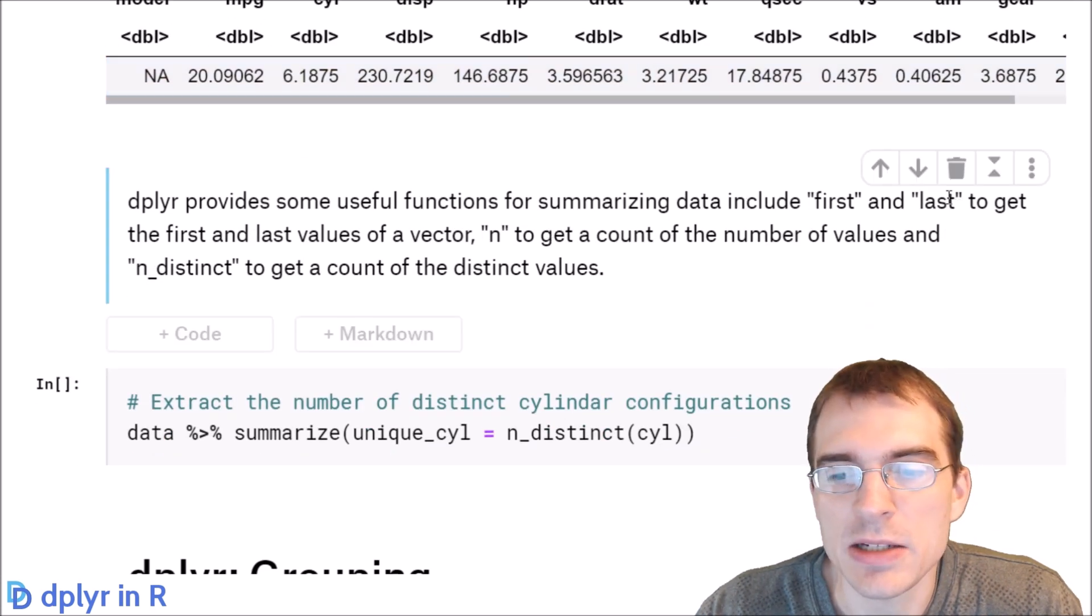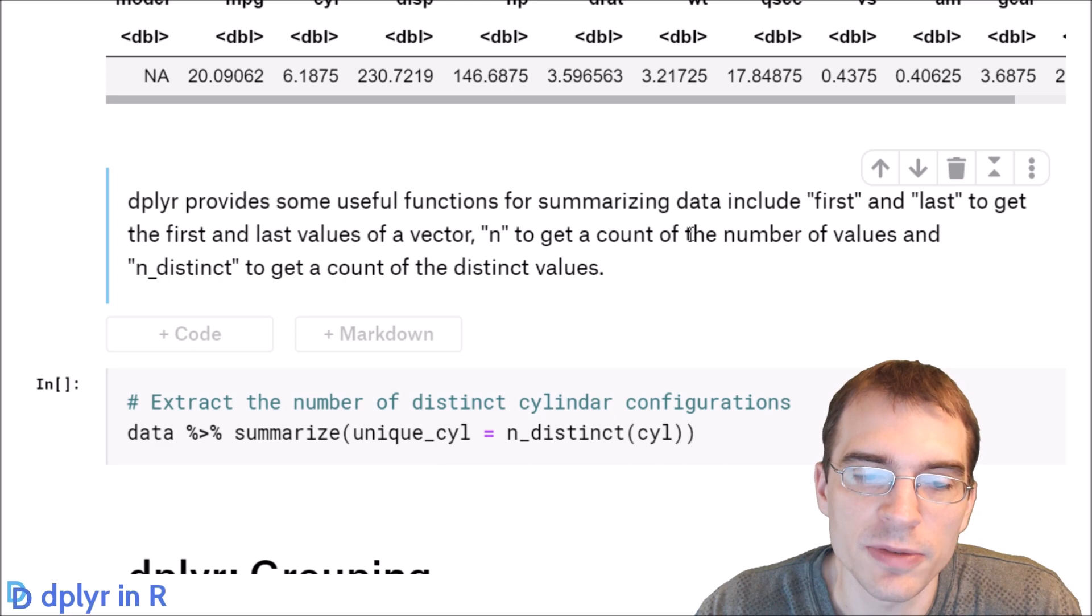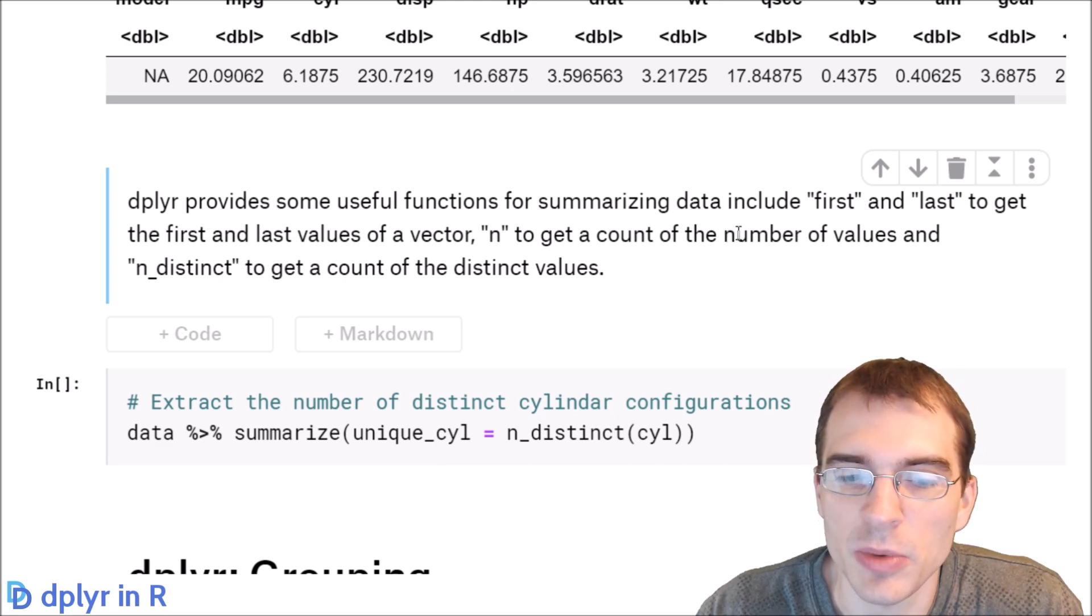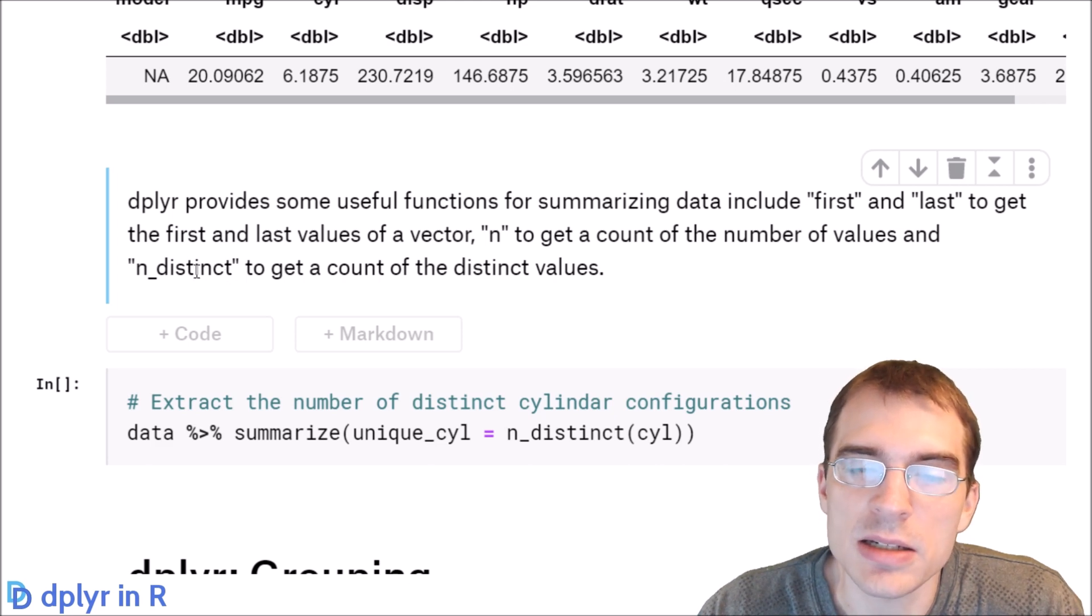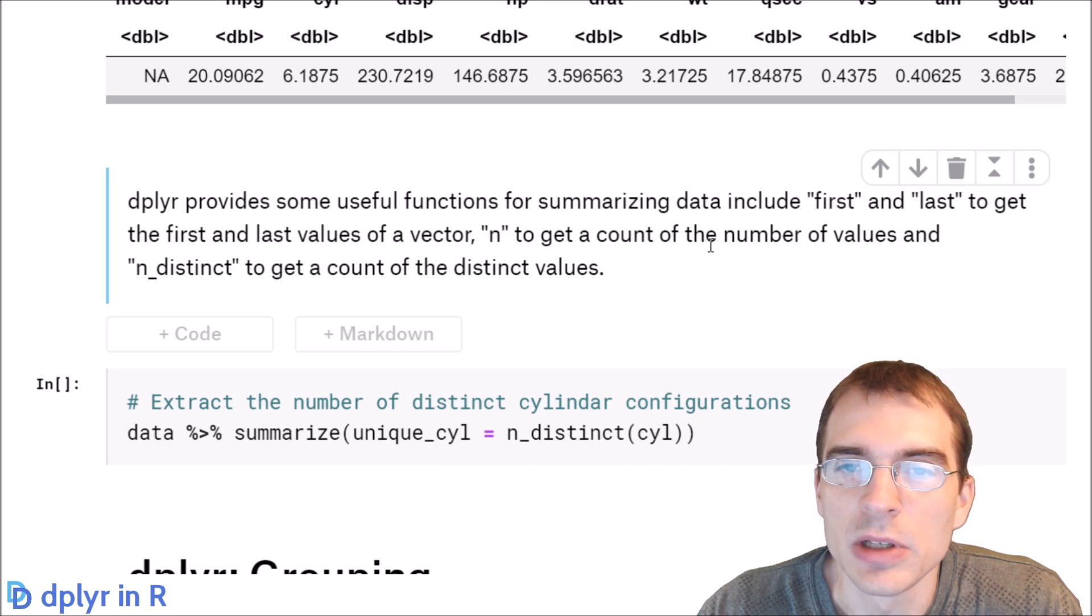The first and last functions let you extract the first and last records from a column. The n function gets the count of the column, and the n_distinct function will get a count of the distinct or unique values in a column.